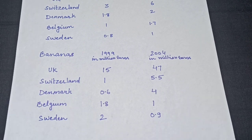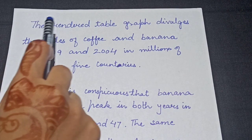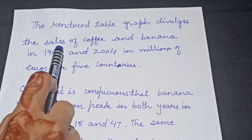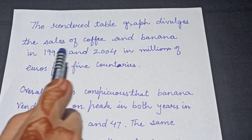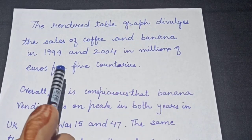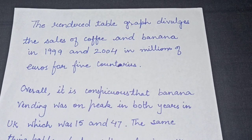So let's have a look at the words now, starting with the introduction. "The rendered table graph diverges the sale of coffee and banana in 1999 and 2004 in millions of euros for 5 countries." So we have just paraphrased the given statement.